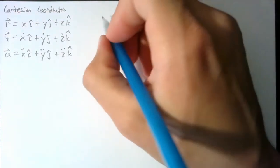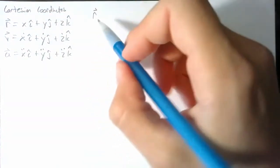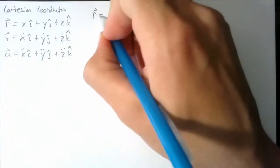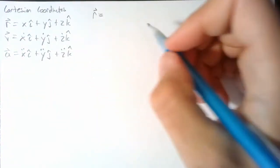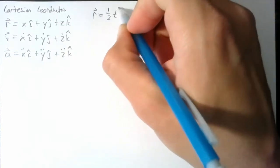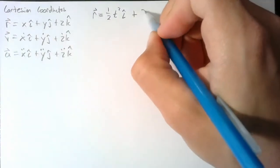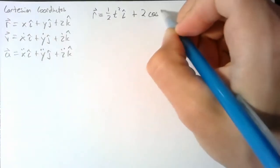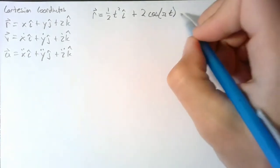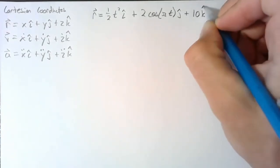Now to illustrate this, let's look at an example. We want our position vector to be time varying. The variation we're going to choose is one-half t squared in the i-direction, 2 cosine of pi times t in the j-direction, and a constant 10 in the k-direction.